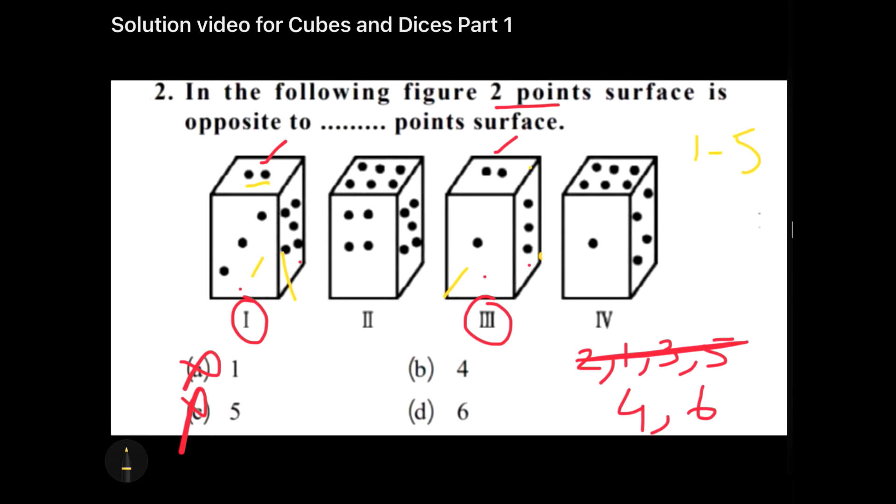This we can also prove by figure number two and figure number four. If you carefully observe, six and four are here and six and four are here, and the only pair which is opposite to each other is five and one. So again we can finalize that five and one will be opposite to each other.